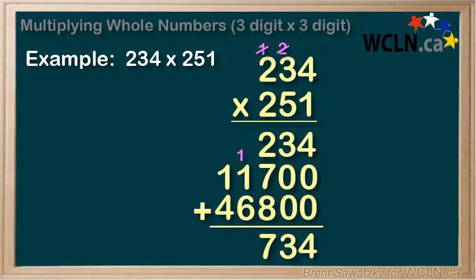1 plus 6 equals 7 plus our carried 1 is 8. And finally, 1 plus 4 equals 5. So our final answer is 58,734.